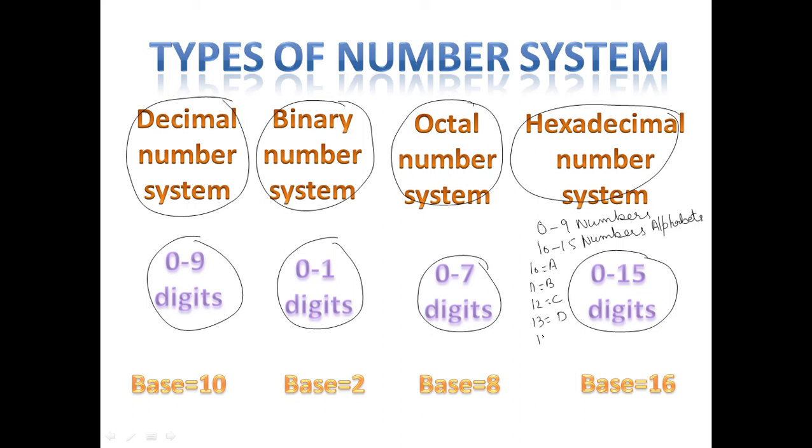The base of decimal number system is 10 because in decimal number system we have 0 to 9 digits. The base of binary number system is 2 because we use 0 and 1 digits. Machine level language only understands 0 and 1 digits.